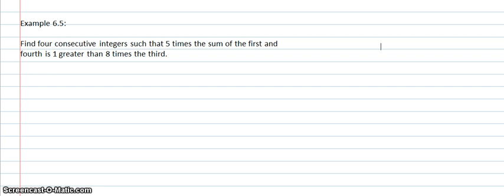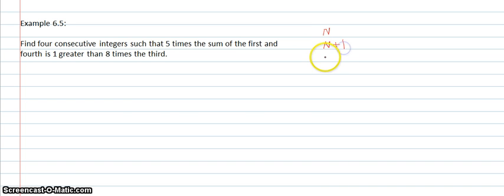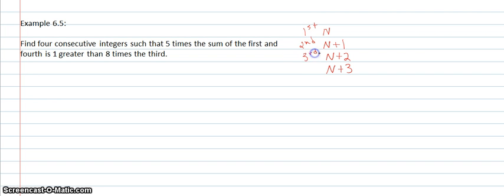The fifth and last example in Lesson 6 is a consecutive integer problem. This time it's not even or odd — it's just consecutive integers. Find four consecutive integers such that five times the sum of the first and fourth is one greater than eight times the third. This time we have four consecutive integers, so I'm going to have n, n plus 1, n plus 2, and n plus 3. Since they're just consecutive, we go up by one. This will be my first, second, third, and fourth.